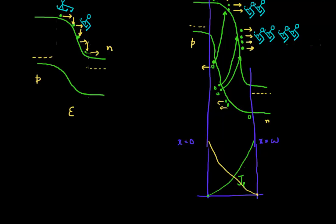If I think of the total current — the hole current was plotted and in green was the electron current — the total current through my depletion region has to remain constant. This is J_total, because in steady state the total current flowing through my diode has to remain constant.